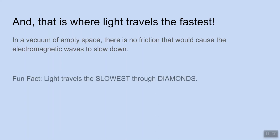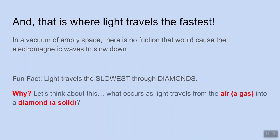And actually, light actually travels the slowest through diamonds, very specifically. And I want us to think about that for a second and take a little review of last week's lesson. Let's think about it. Why would light travel the slowest through something like a diamond?